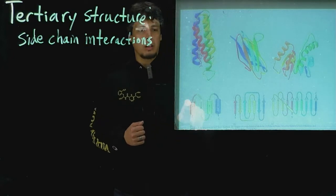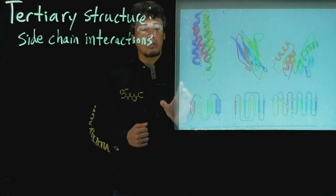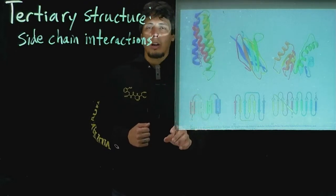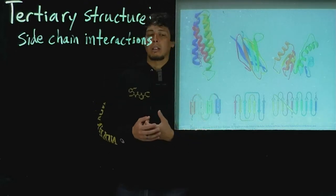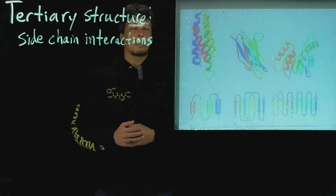So we can look at the three-dimensional structure of this protein, and then on the bottom this is just a schematic of the secondary structure where the cylinders are alpha helices.